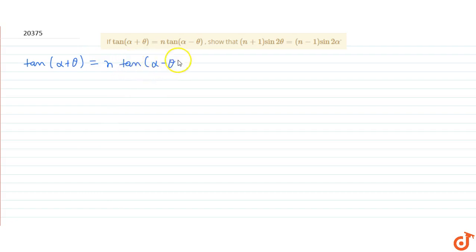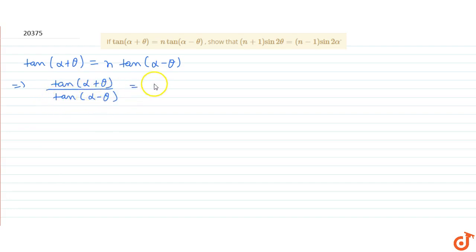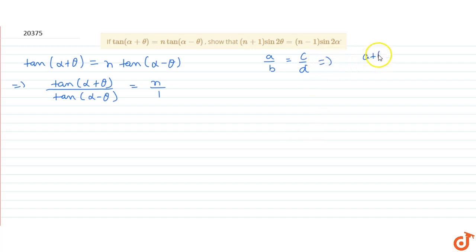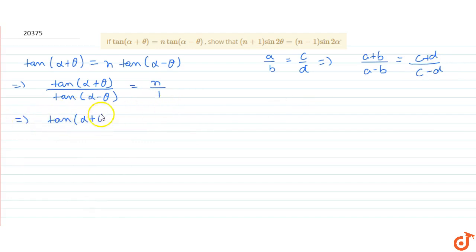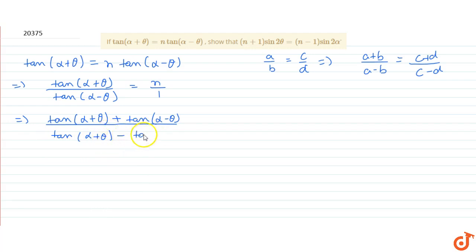This can be written as tan(α + θ) divided by tan(α - θ) = n/1. Now using componendo and dividendo, which says that if a/b = c/d then (a + b)/(a - b) = (c + d)/(c - d), we get: [tan(α + θ) + tan(α - θ)] / [tan(α + θ) - tan(α - θ)] = (n + 1)/(n - 1).